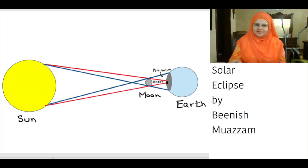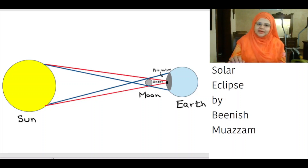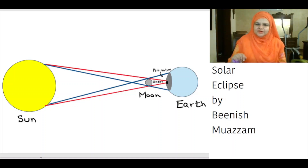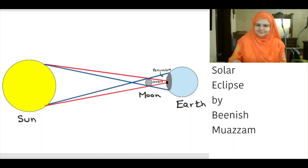A solar eclipse occurs when the moon is positioned between the earth and the sun and casts a shadow over the earth. Solar eclipses only occur during a new moon phase, usually about twice a year, when the moon aligns itself in such a way that it eclipses the sun. Eclipse means any dimming or obstruction of light.